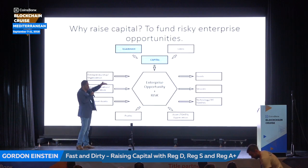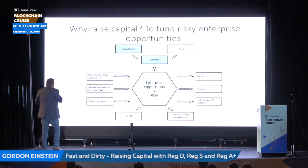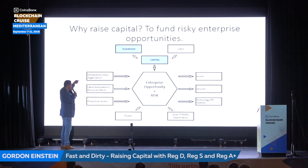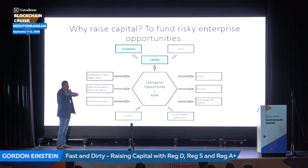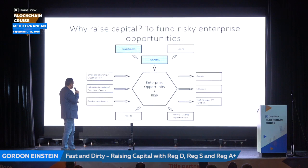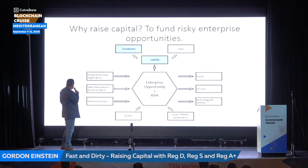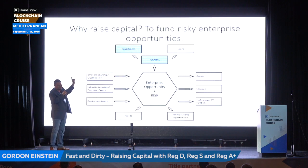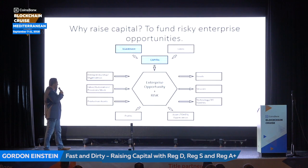This model is true whether you're starting a business or a blockchain platform. You have an enterprise opportunity that's risky and not yet accomplished. You need someone to come up with the idea and organize it — that's the entrepreneur or management. You need people to do the work, whether that's labor, automation, or processes. You need productive assets — used to be land or buildings, but maybe now intellectual property. You throw those together and hopefully what comes out is it produces goods, services, technology, or tokens, and it sells those things.